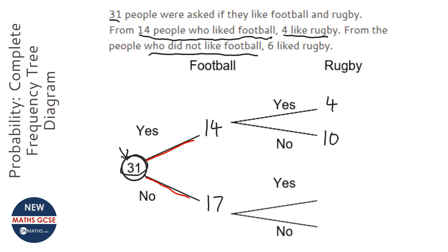It doesn't talk about having maybe as an option here. And it says 6 of those people like rugby, so 6 of those people like rugby, therefore there needs to be 11 people who don't like rugby.